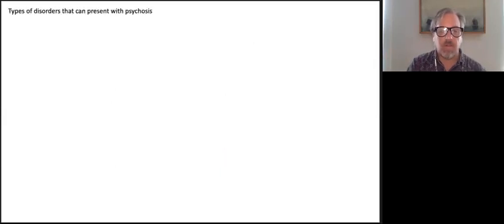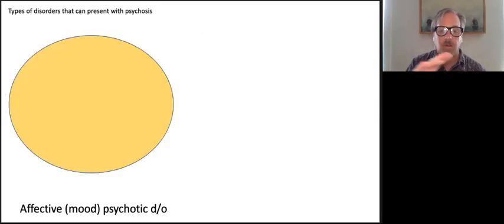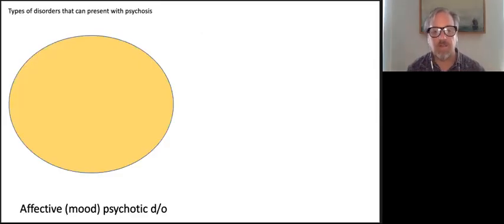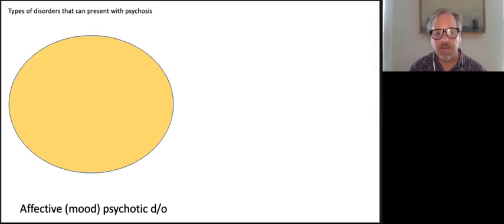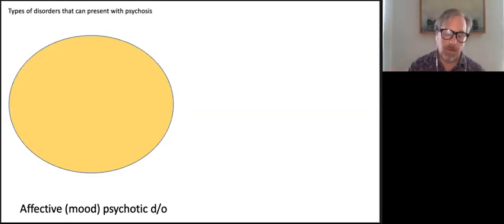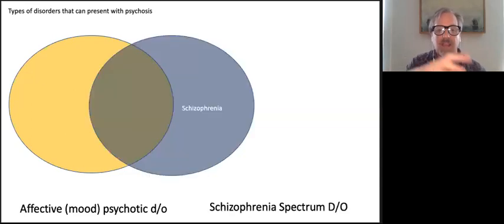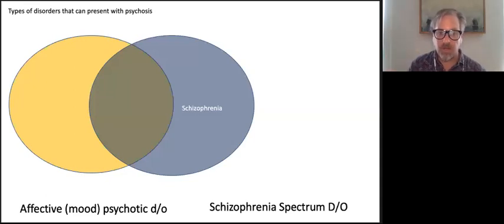This is a little confusing. As you'll see from this diagram, there are a number of clusters which can have psychotic symptoms as a part of their presentation. I'm going to start with affective or mood disorders — things such as bipolar disorder, major depression with psychotic symptoms — and then we have the schizophrenia spectrum disorders, with significant overlap between the two disease states.